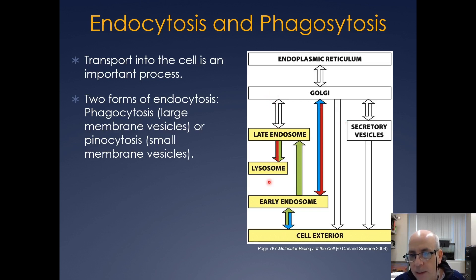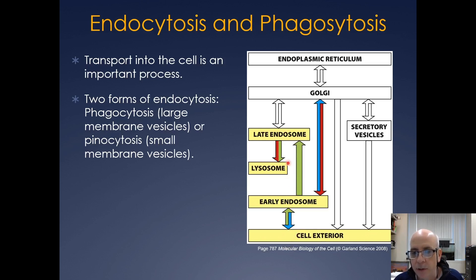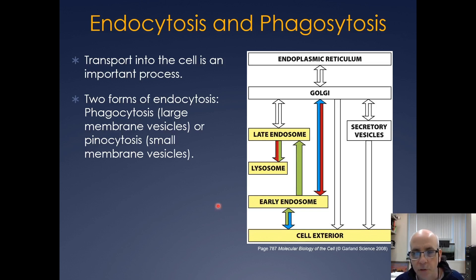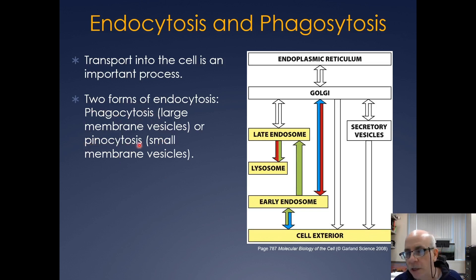We just covered Golgi to late endosome to lysosome. Now we'll look at cell exterior to early endosome to late endosome to lysosome. There are two main pathways from the cell exterior to the lysosome: phagocytosis, where you bring in large particles, and pinocytosis with smaller vesicles. Sometimes people refer to phagocytosis as cellular eating and pinocytosis as cellular drinking.